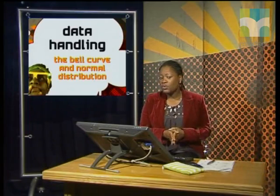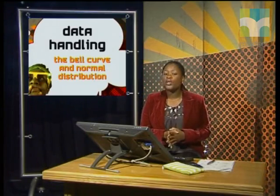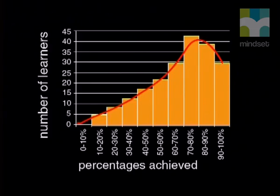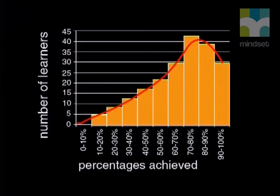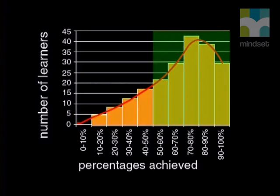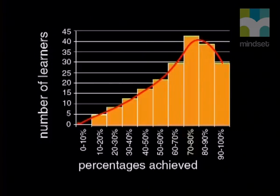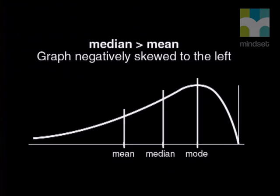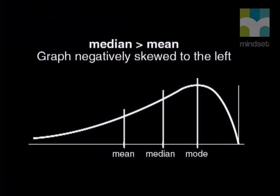On the other hand, if the test was very easy, the graph would look like this. Most marks are high; however, there are still some students who didn't manage to do well. This is exactly the opposite of the other graph — the mean and median will be to the right of the peak, with the median more to the right than the mean. The mode here is at the peak value of between 70 to 80%. We say that if the median is larger than the mean, the graph is negatively skewed to the left.